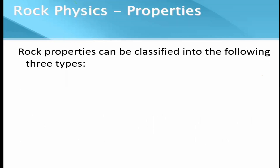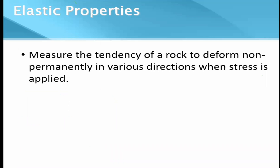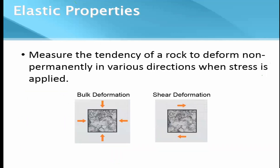Rock physics deals with three types of properties: elastic properties, geometric properties, and fluid properties. The elastic properties include elastic moduli such as bulk modulus, shear modulus, Poisson's ratio, and so on. From certain petrophysical logs or seismic-derived properties like acoustic impedance, we can derive velocity and density and compute these elastic properties. We will see what the three essential components are through which all these things can be computed.